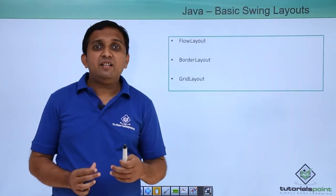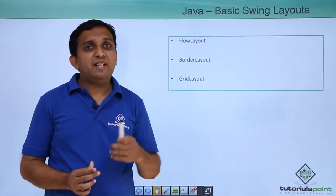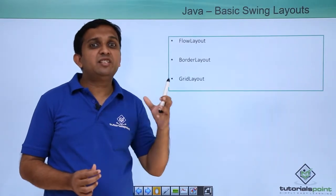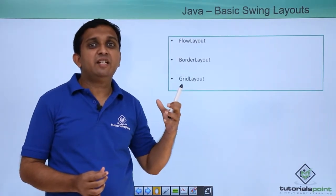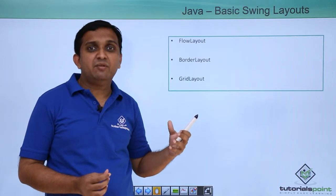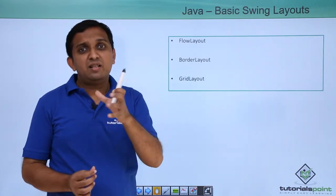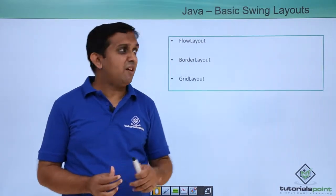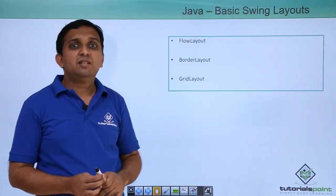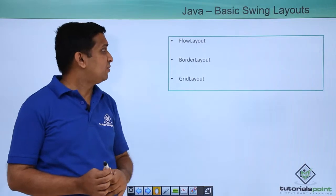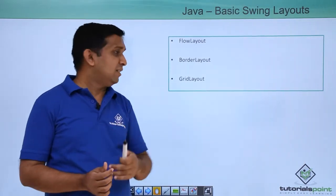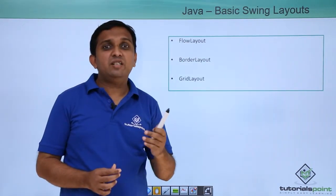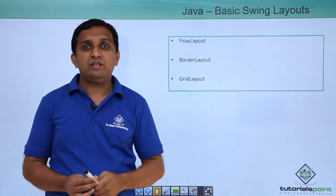When I create a user interface, first I create the UI part. I need to place components like JButton, JTextArea, JTextField, and so on onto the UI. The format in which I can place them is defined by the layout. In Java, there are three layouts: Flow Layout, Border Layout, and Grid Layout. Flow Layout means one component is placed after the other in sequence.